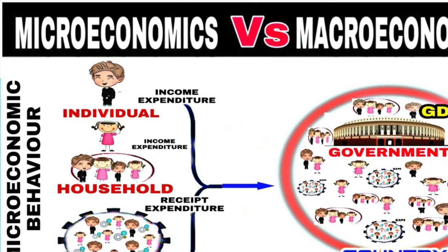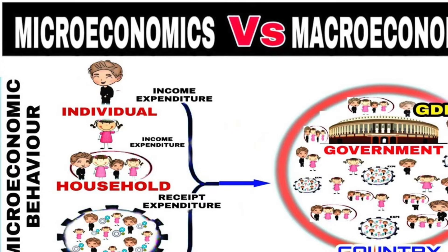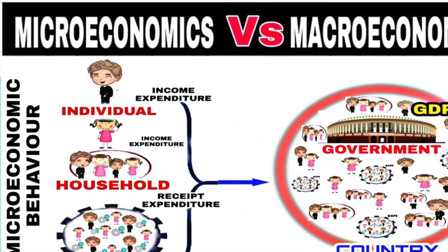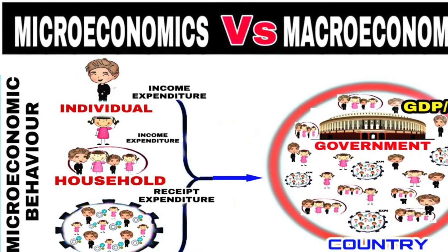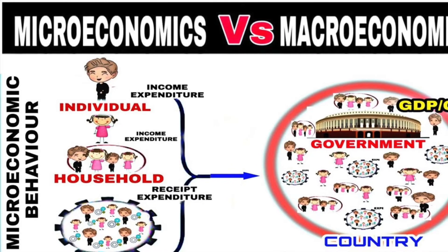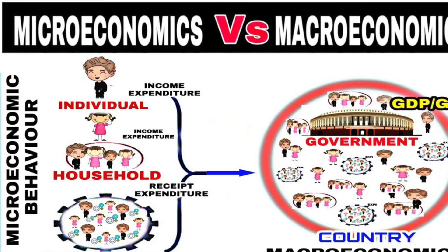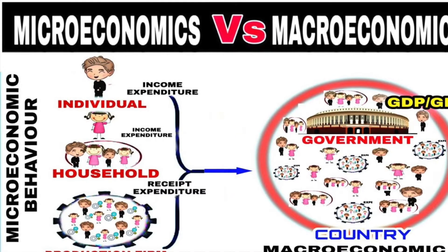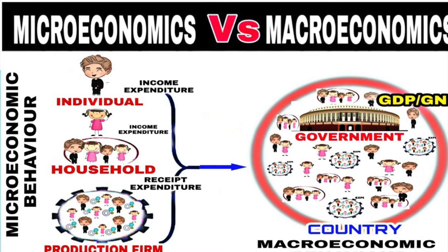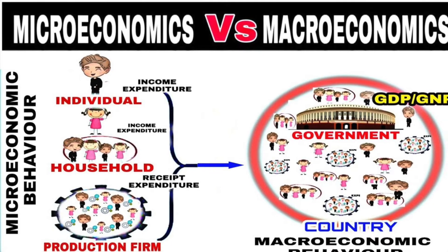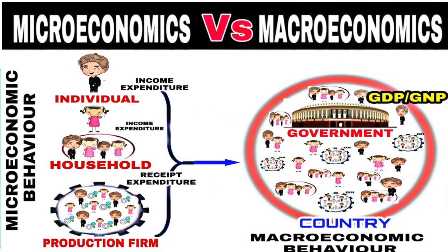Then we have the large economy, which covers the government, the central banks, all of the people, all of the businesses in a country, and also foreign trade, which affects the aggregate whole economy. So micro is for the small and macro is for the large.